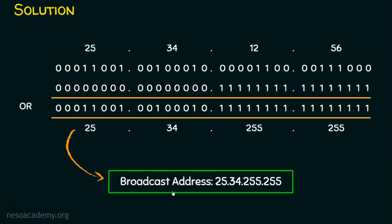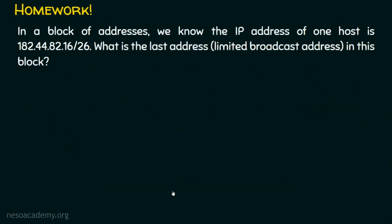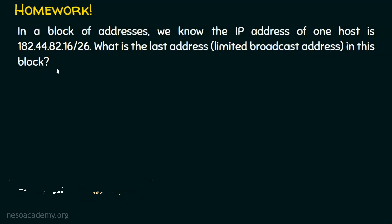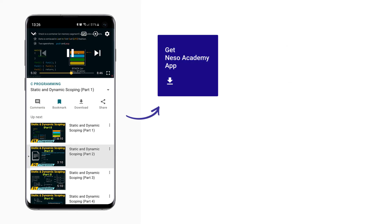Before we conclude, let's see the homework question. In a block of addresses, we know the IP address of one host is 182.44.82.16/26. What is the last address — the limited broadcast address — in this block? You are required to find the broadcast address. I hope you enjoyed this lecture. Thank you for watching. Bye-bye.